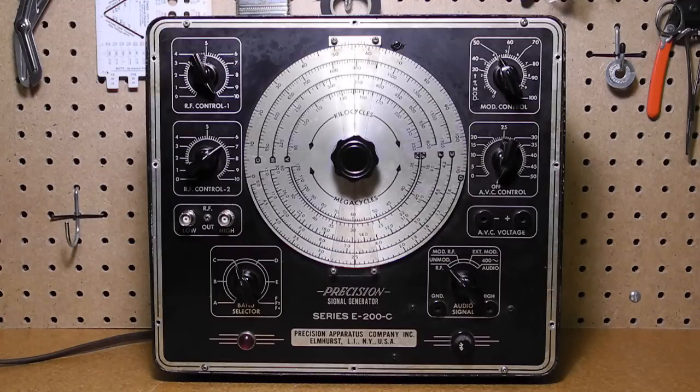It can directly output the 400 Hz sine wave audio signal with an adjustable output level. There's an AVC voltage output which produces an adjustable negative DC voltage up to about minus 50 volts. I'll explain the purpose of this later.